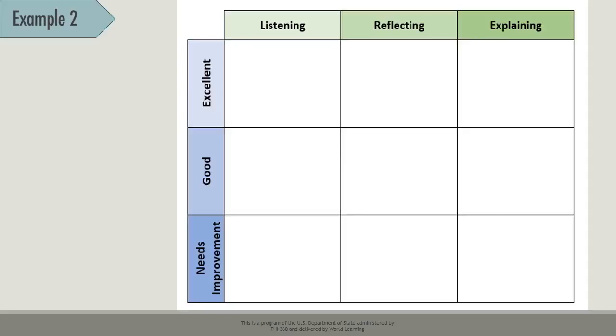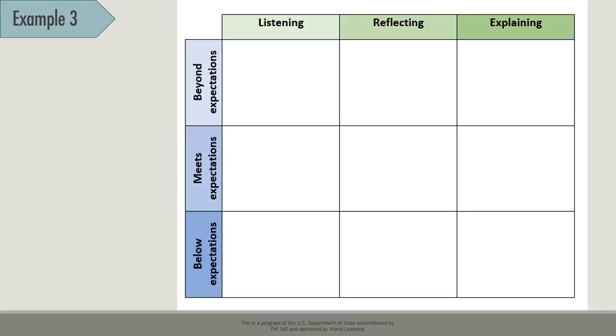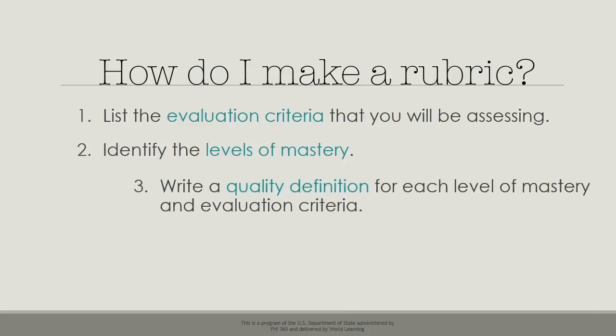This last example includes levels of mastery related to meeting criteria expectations. When considering what to write for levels of mastery, it's important to think about who your students are and the purpose of the rubric. Then you must write quality descriptions for each level as it relates to each evaluation criteria. The definitions need to be about observable and measurable behavior — this will help distinguish between the levels and help both learner and educator accurately and fairly assess progress. For example, 'thinks critically' is too vague. The level of detail you include depends on your students and context.